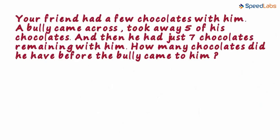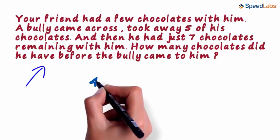Read this short story and the question that follows. Your friend had a few chocolates with him. A bully came across, took away 5 of his chocolates. And then he had just 7 chocolates remaining with him. How many chocolates did he have before the bully came to him? This question has 40 words.